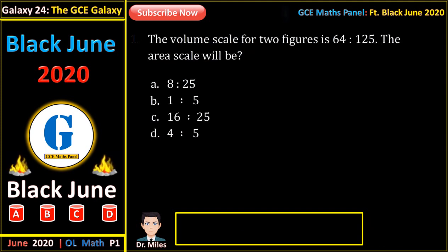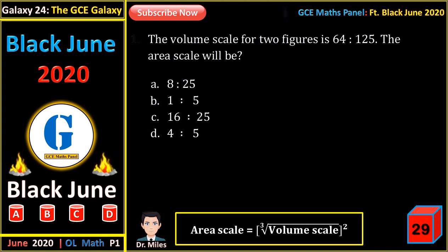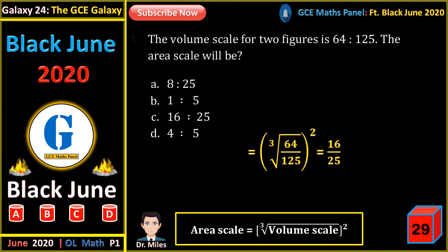The volume scale for two figures is 64 to 125. The area scale will be? We first get the linear scale, which is the cube root of the volume scale, then square this value to get the area scale. The cube root of 64 on 125, all squared, gives us 16 on 25.